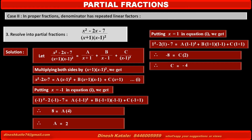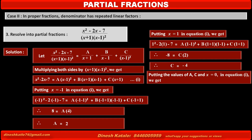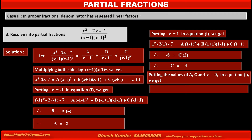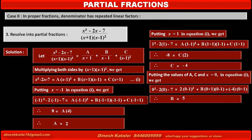Now, by taking any convenient value of x and substituting the values of A and C in equation 1, we can find the value of B. Putting x = 0, A = 2, and C = -4 in equation 1: the left-hand side gives 0 - 0 - 7 = -7. The right-hand side gives 2(0-1)² + B(0+1)(0-1) + (-4)(0+1). Solving, we get B = 5.